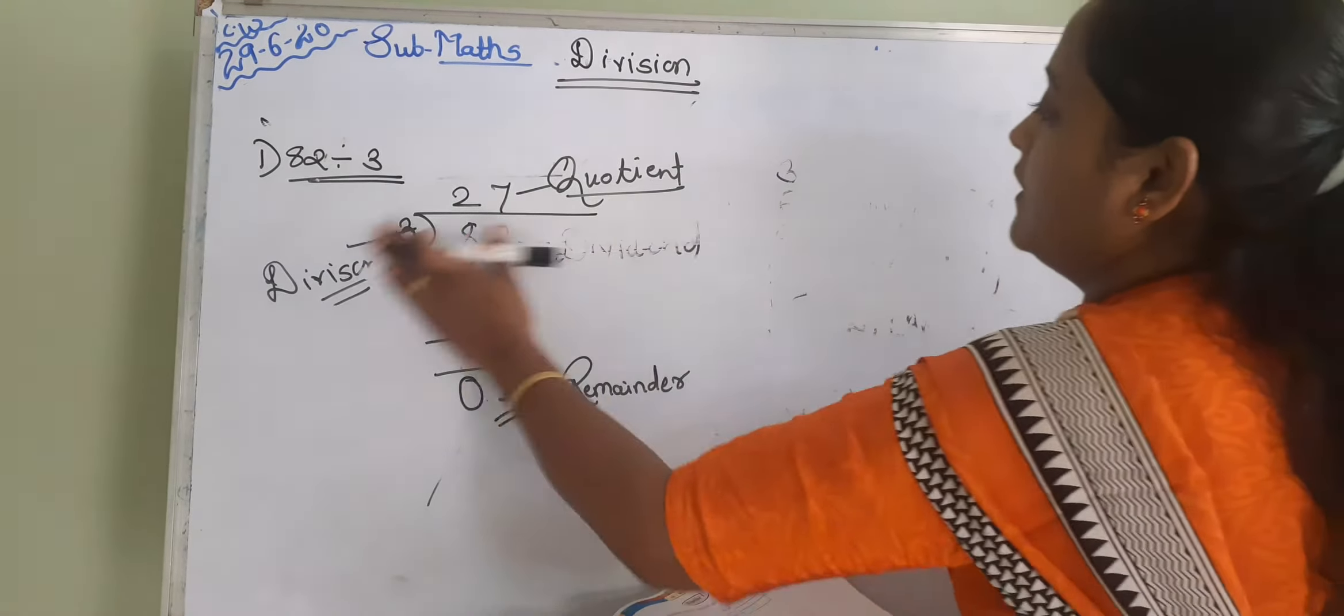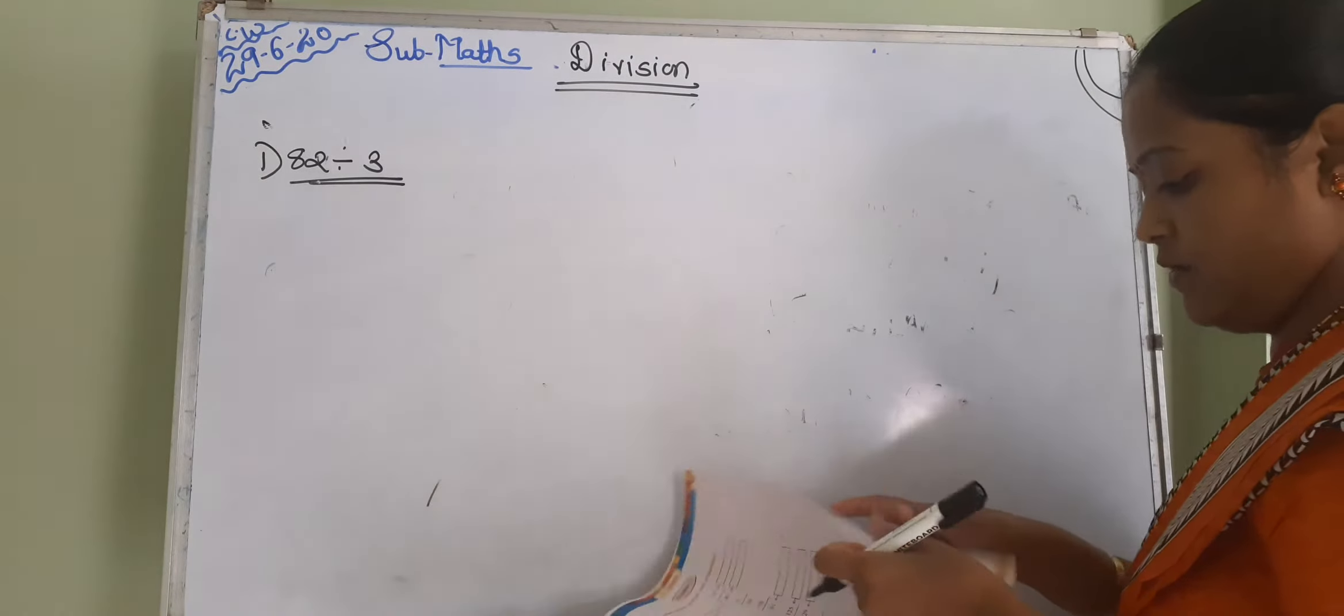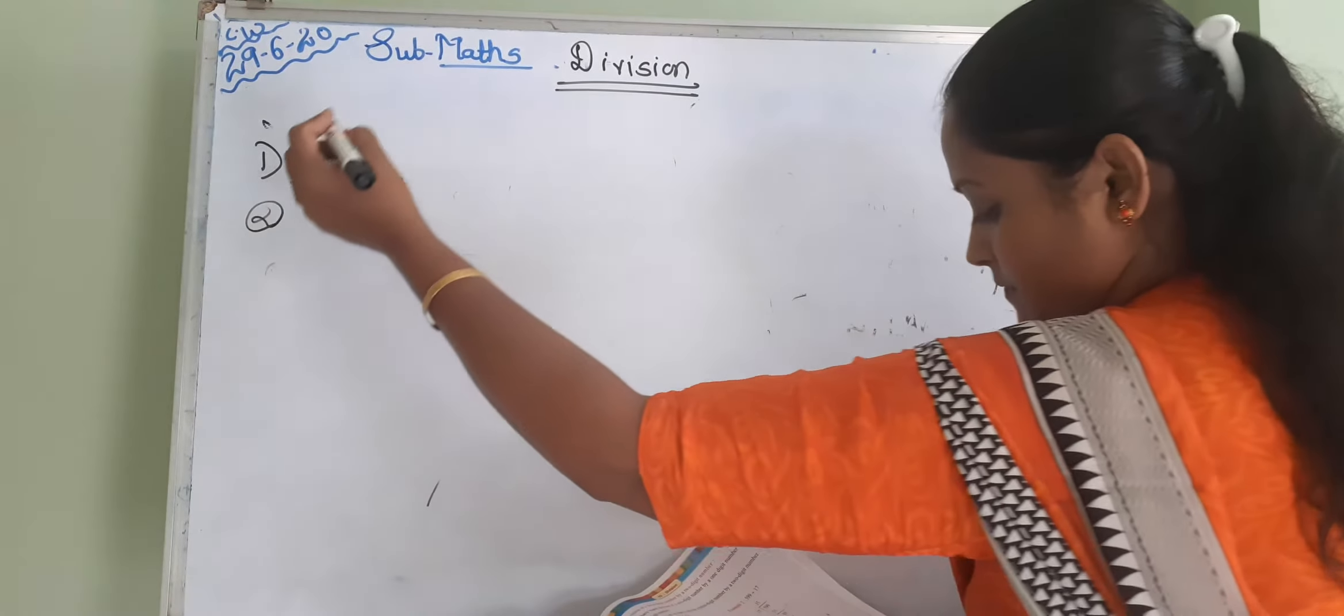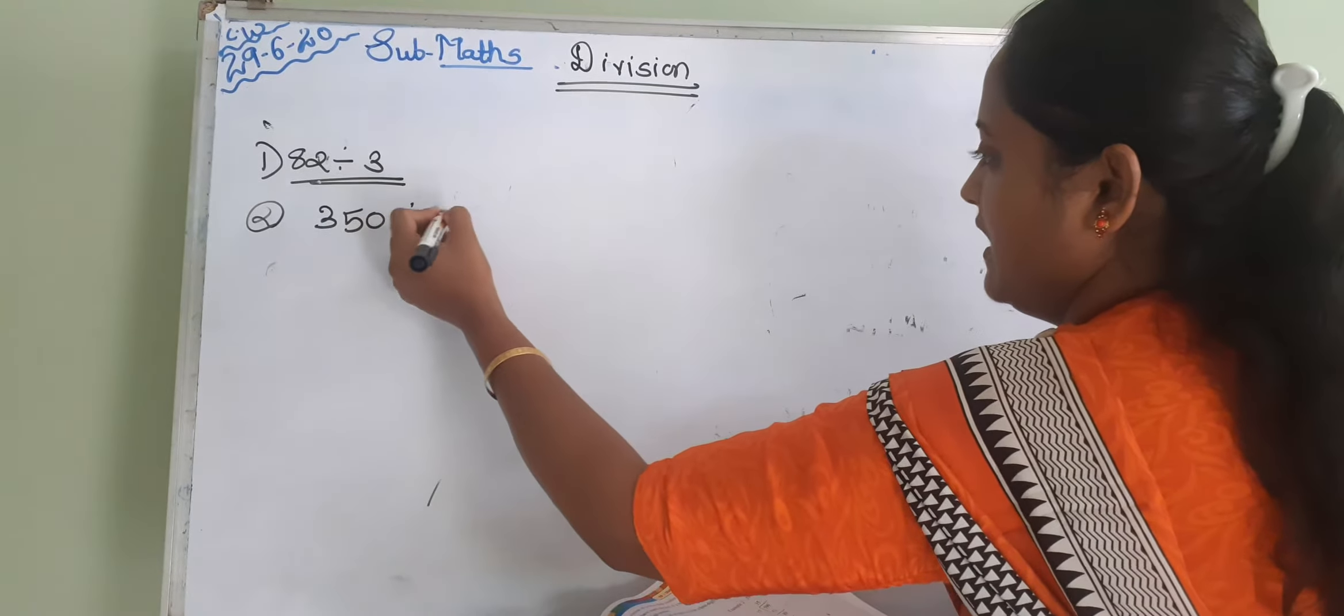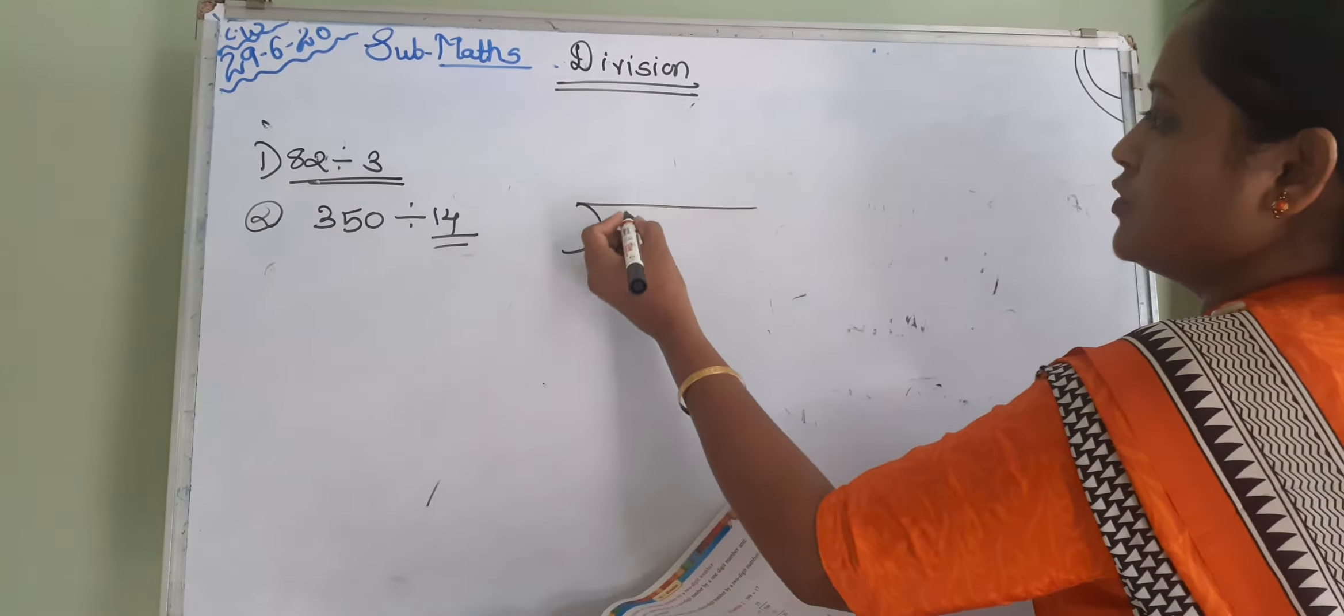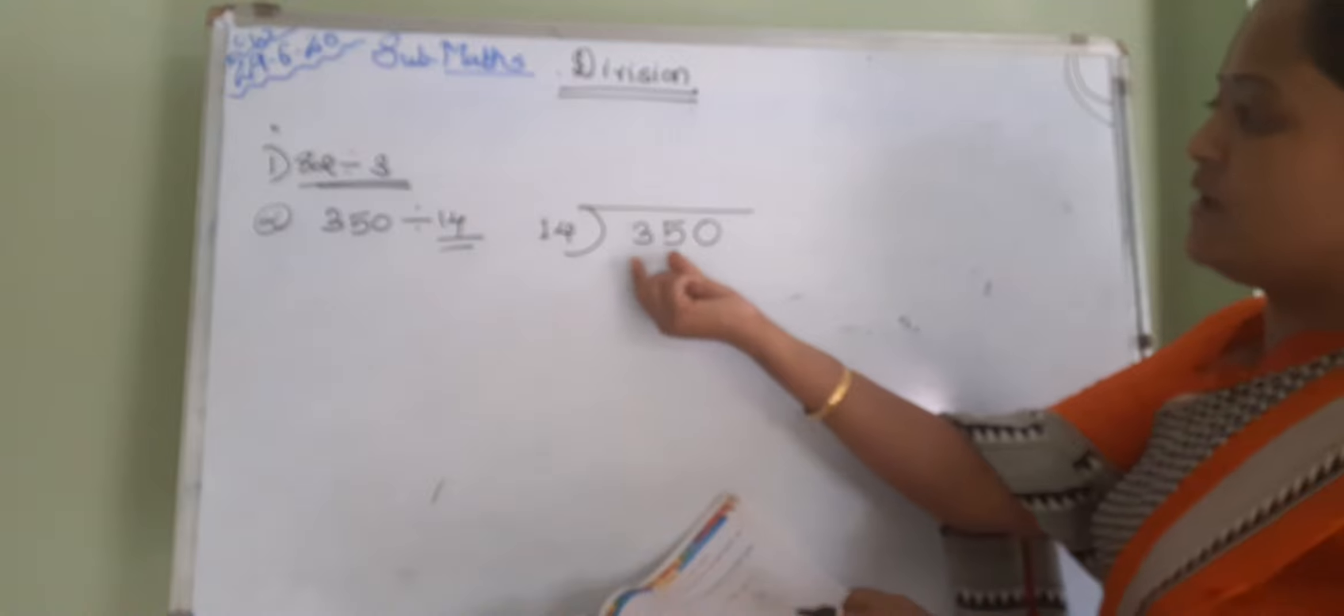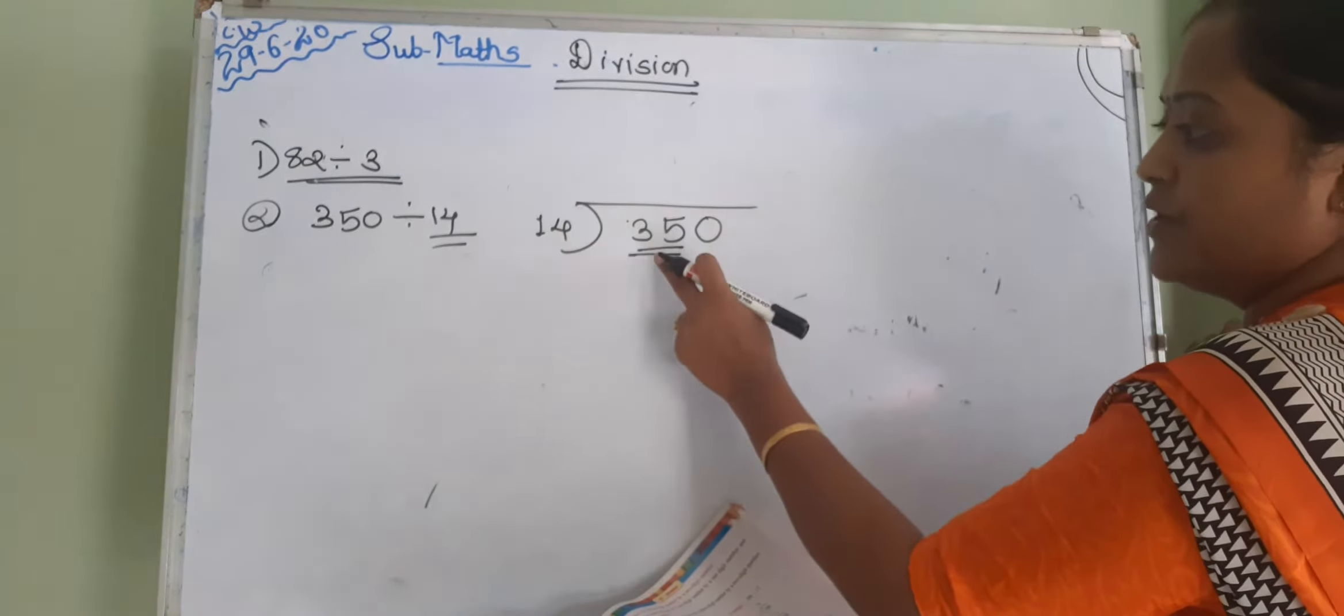Now, we are doing division of two digit number. First, I am taking one sum. It's 350 divided by 14. So divisor is 14 and it's 35. First number हम यहां पे two digits है, तो two digit के साथ ही हम compare करें. So 14 और इधर 35, 35 is greater than 14. तो हम अभी यह check करें हैं कि 35, 14 के table में आता है कि नहीं.